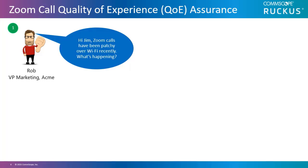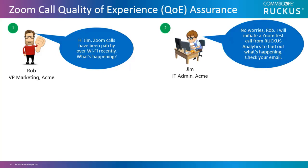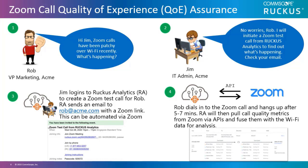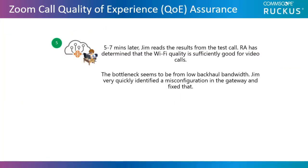Let's go through an example of how this works. Rob, a marketing VP working at Acme, calls Jim, the IT admin at Acme, and says that his Zoom conference calls have been patchy over Wi-Fi recently and wants to know what's wrong. Jim logs into Ruckus Analytics Service, which is a Zoom account separate from Ruckus or Comscope, and creates a Zoom test call for Rob. The RA service generates a Zoom link, which can be copied and pasted into an email or sent automatically via the Zoom app and sent to Rob at Acme.com. Jim and Rob both dial into the Zoom call and hang up after five to seven minutes, which allows enough time to get meaningful data as Zoom collects data every 60 seconds. During the call, they should be streaming video and audio and doing meaningful things that require some significant bandwidth. Ruckus Analytics will then pull call quality metrics from Zoom via APIs to a Zoom public server and fuse them with the Wi-Fi data for analysis.